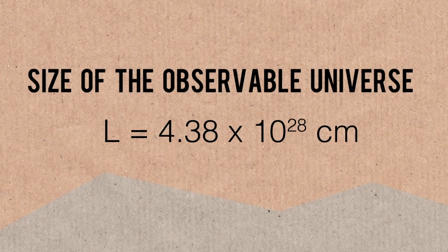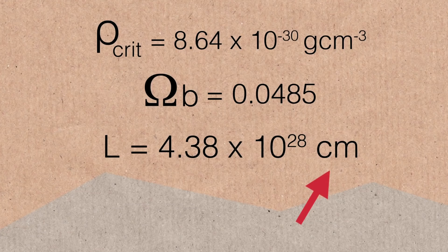The third piece is the size of the observable universe. Again from Planck data, we get a figure of about 10 to the 28 centimeters — one with 28 zeros after it. I'm keeping it in centimeters to stay consistent with the other units and not get them mixed up.